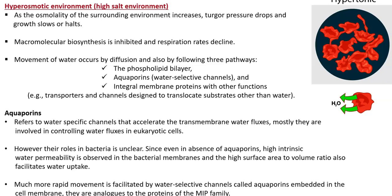The first mechanism to come into effect is the movement of water through diffusion. Water can also move through direct movement through the phospholipid bilayer, with the help of aquaporins — water-selective channels — and through certain integral membrane proteins that perform other functions, such as transporters and channels designated to translocate substrates other than water, which under stressful conditions become involved in osmoregulation.